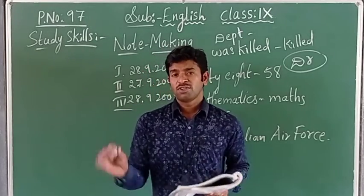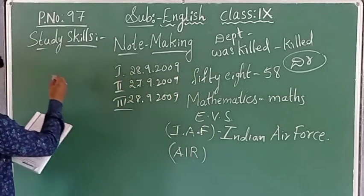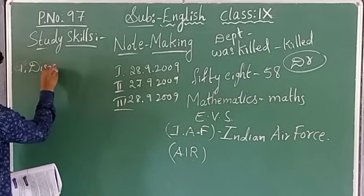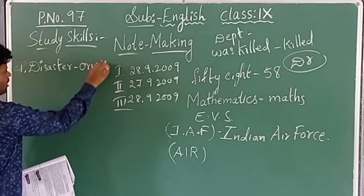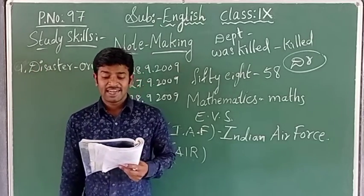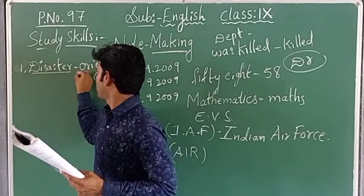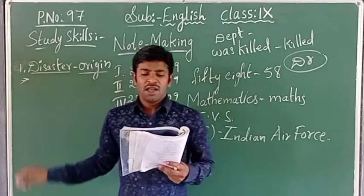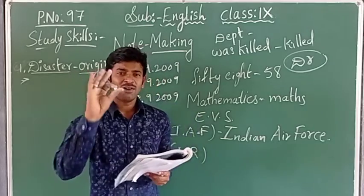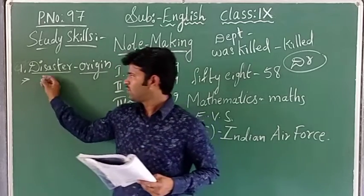I have read the passage. Now note pointing — we shall note the main important information from this passage. First point: disaster origin. The word disaster is derived from medieval French 'désastre' and from Old Latin 'disastro'. You don't write a full sentence — just keep it as a note point. That is enough — you have made one note point.